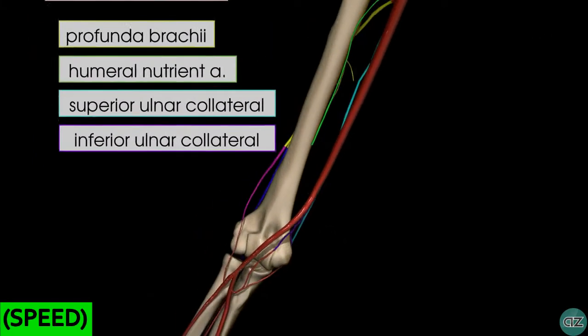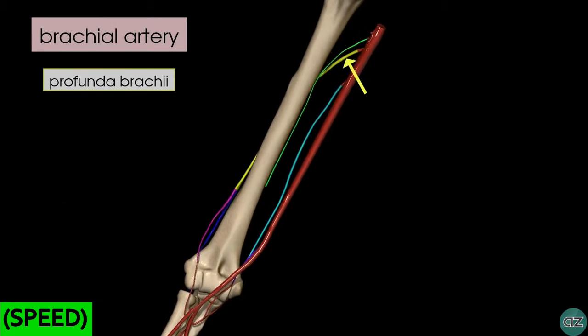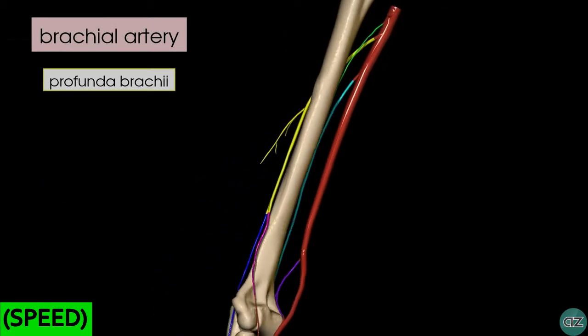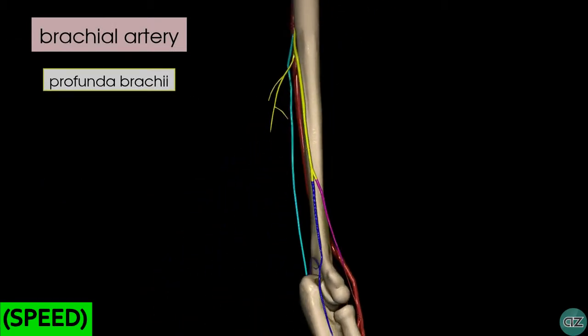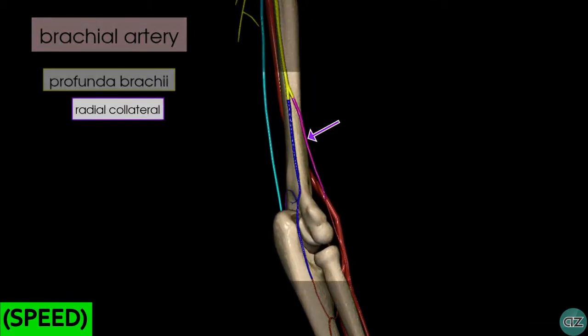Let's take a look at the profunda brachii artery, which we saw in yellow. This artery is the largest branch and it passes posteriorly to supply the posterior compartment of the arm. As you can see here, the profunda brachii artery terminates by dividing into two branches: in purple you can see the radial collateral artery, and in blue we've got the middle collateral artery.